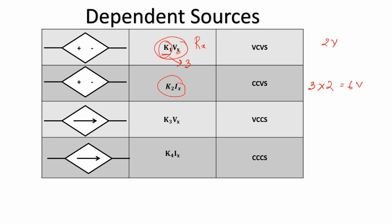For the current controlled voltage source, the parameter which controls the voltage is the current flowing through some element Rx. Similarly, for the current sources: a voltage controlled current source has its output current controlled by the voltage across some element Rx, and a current controlled current source has its controlling parameter as the current flowing through some element Rx.